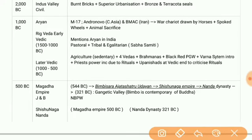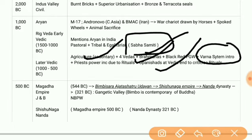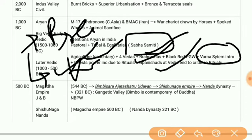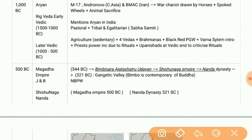Aryans in India were pastoral, tribal, and egalitarian — there were sabha and samiti. Agriculture was present and life was sedentary. Four Vedas were there and Brahmins were prevalent. Black and red pottery was found. The Varna system — four types — was there: Brahmins on top, then Kshatriyas, then Vaishyas, then Shudras. Priests came into power due to rituals such as the sacrificing of horses. Upanishads were there to criticize rituals.